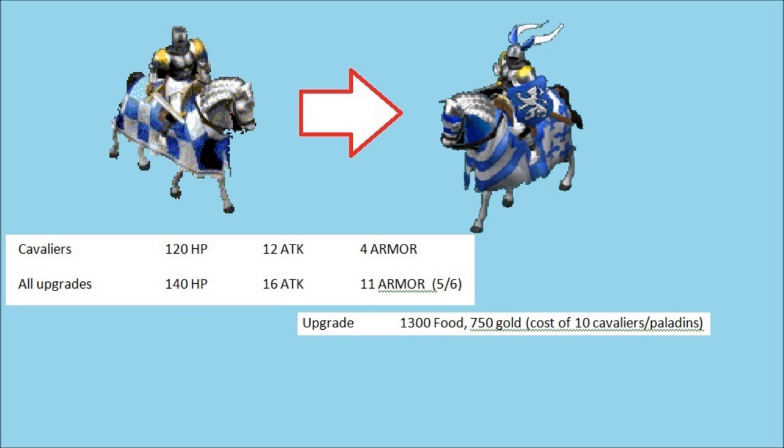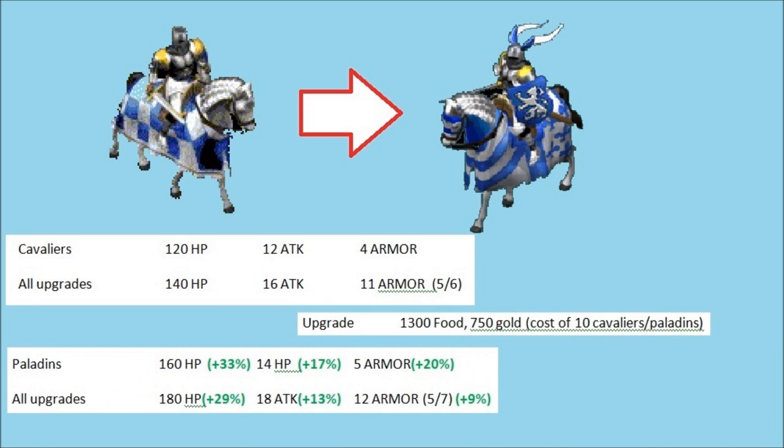Okay, so now it gets a little bit complicated, because it depends, are we talking about just the base unit, or are we talking about if you have all the upgrades? On the screen there, I show all the Paladin stats, and in the green in brackets, I show how much of a percentage upgrade that is over the Cavalier for the corresponding stat. As you can see, if you have all of the upgrades, because they affect both the Cavalier and the Paladin, that makes the percentage increase a little bit less.